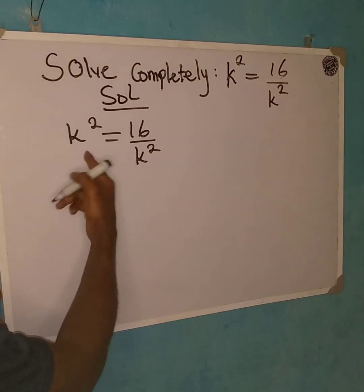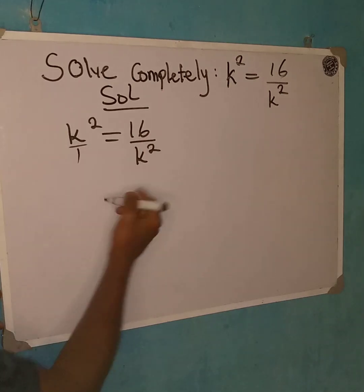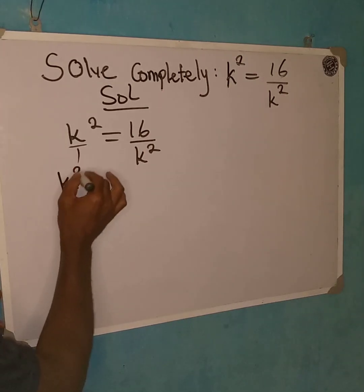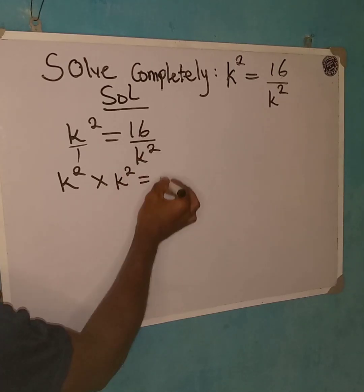Do not think that these can cancel each other. The first thing you are going to do is to cross multiply, so that we have k squared multiplied by k squared to be equal to 16.